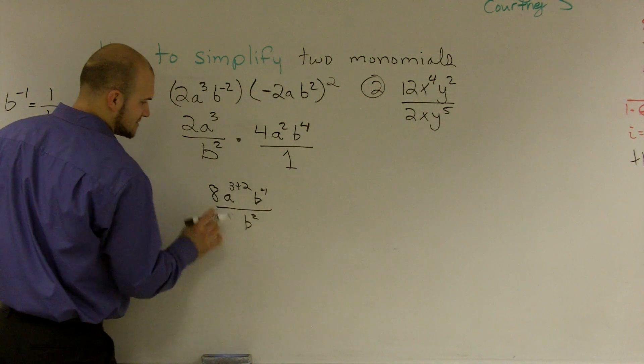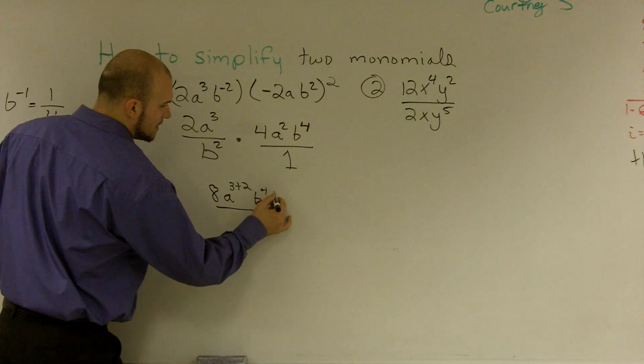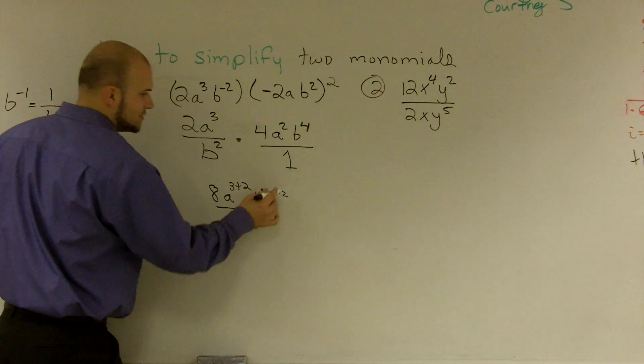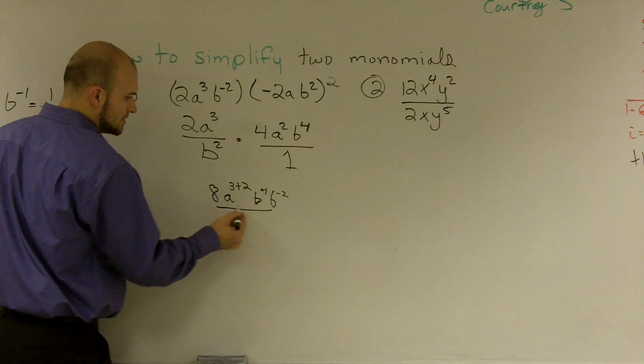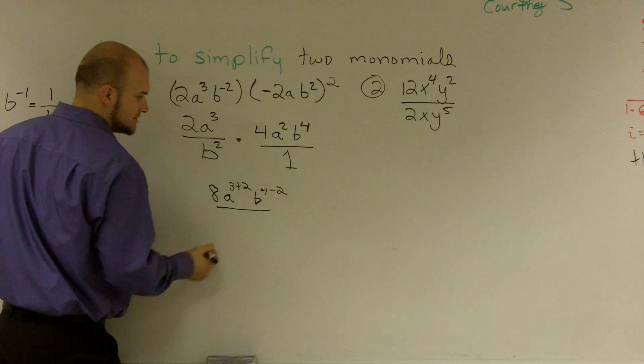So essentially, I can kind of rewrite this as b to the negative 2, where I'm going to go and subtract these. So, b minus 2.